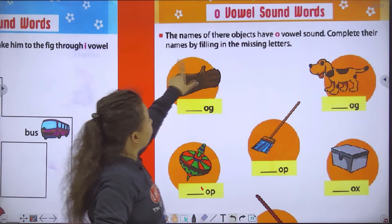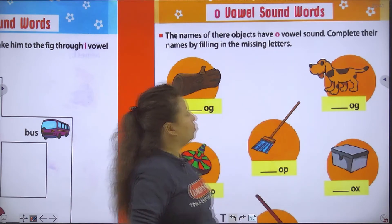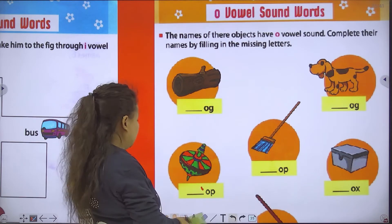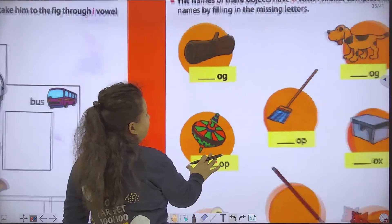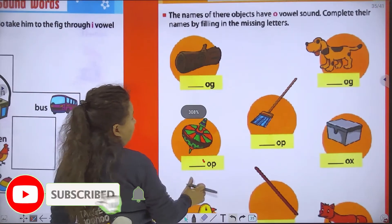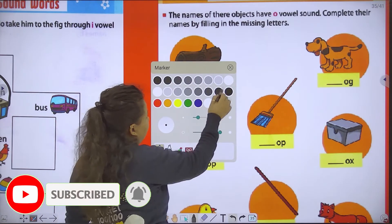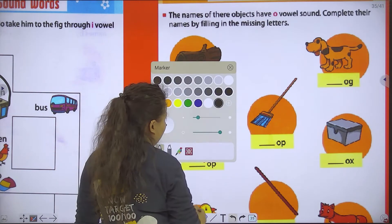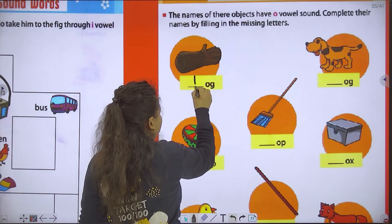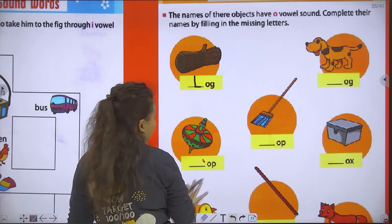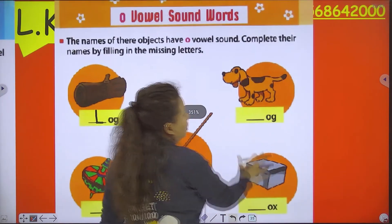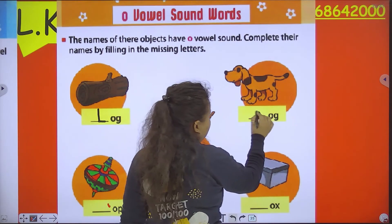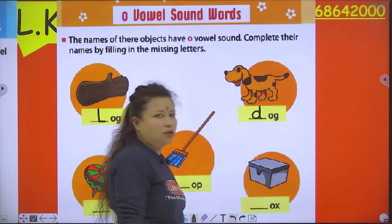The names of these objects have O vowel sound. Complete their names by filling in the missing letter. Like, which picture is this? This is log — L-O-G, log. This is dog — D-O-G, dog.